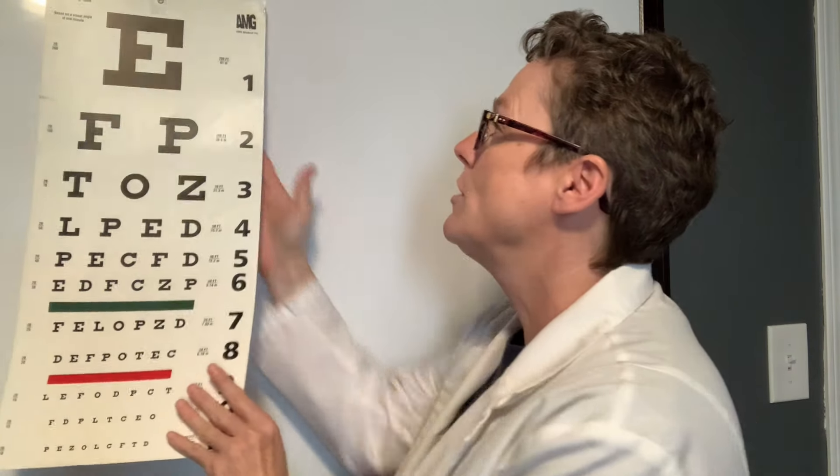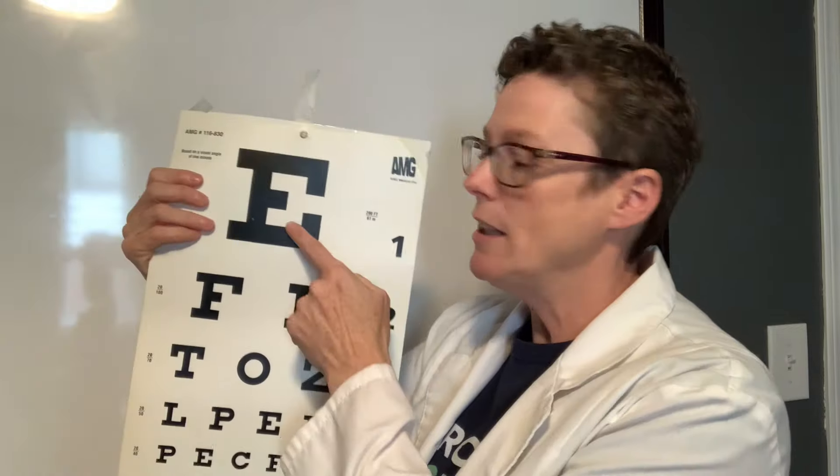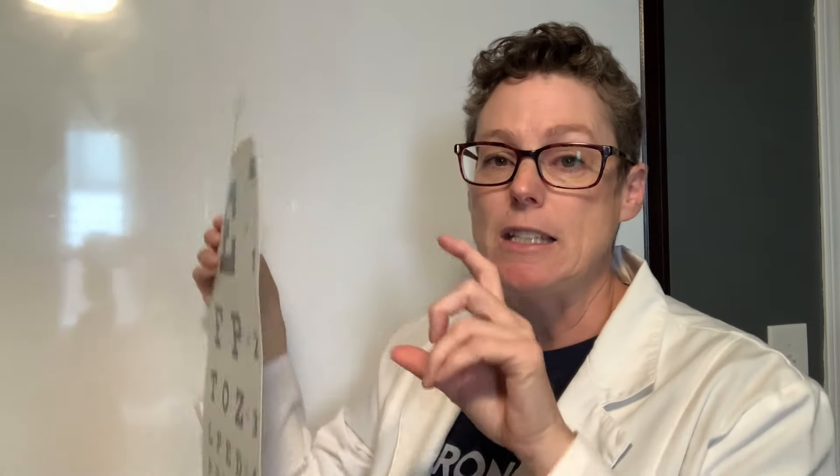The Snellen chart is typically used for those who are school age and above, since they need to be able to read and understand letters. For younger children, there are charts with pictures on the back side, or another version that uses just the letter E in different orientations — the child is asked to identify which way the E is facing. So there are a few different ways in which a doctor may test your eyes.